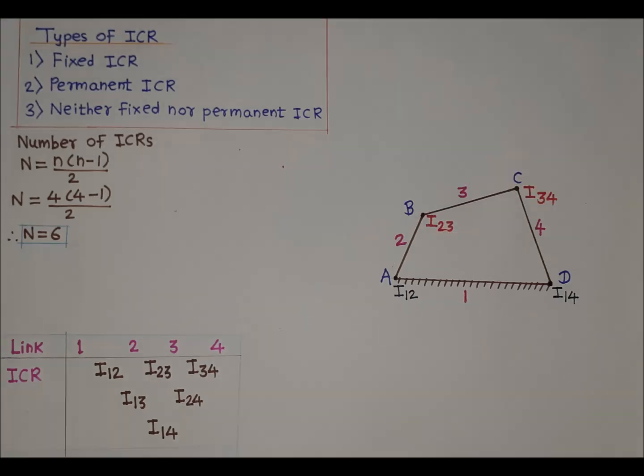These ICRs are known as fixed ICRs, as their position will never change. Between link number two and link number three there is a turning pair at point B, hence ICR i23 for relative motion between link two and three will be at point B. Similarly, between link number three and link number four there is a turning pair at point C, hence ICR i34 for relative motion between link three and four will be at point C.